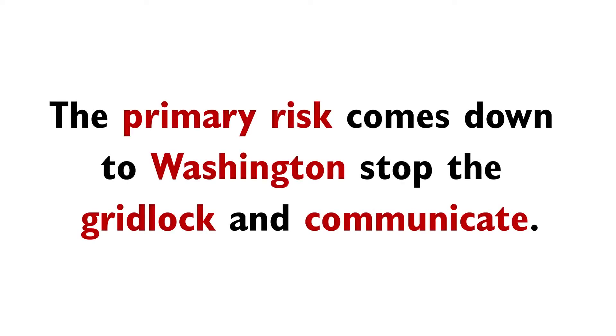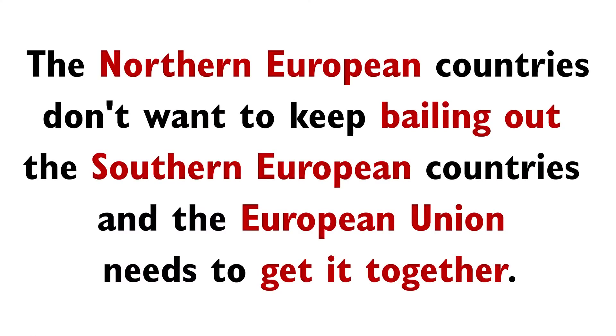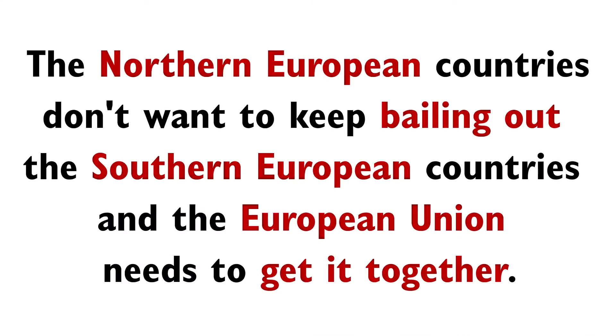We have some primary risks out there, and the primary risk really comes down to Washington. They've got to get out of this gridlock, talk to each other, and come up with something substantive that everybody in the country believes can actually work. Secondary risks: the northern European countries are getting to the point where they don't want to keep bailing out the southern European countries. The European Union has got to get their act together or it could put us into a recession.